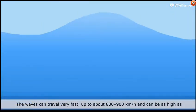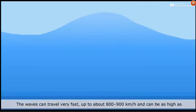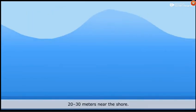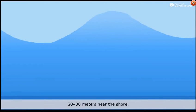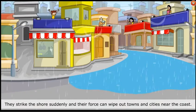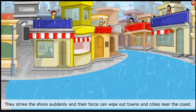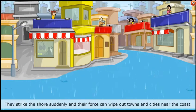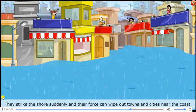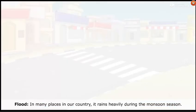The waves can travel very fast — up to about 800 to 900 km per hour — and can be as high as 20 to 30 meters near the shore. They strike the shore suddenly and their force can wipe out towns and cities near the coast.